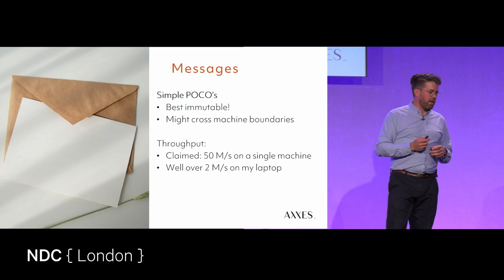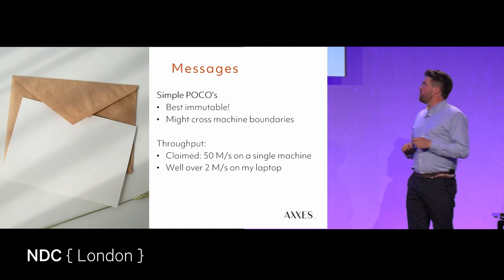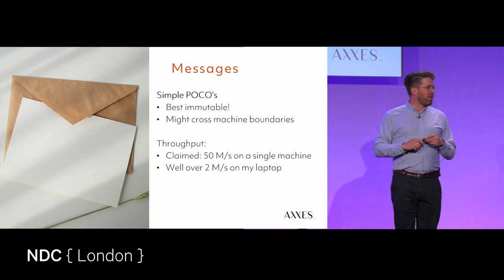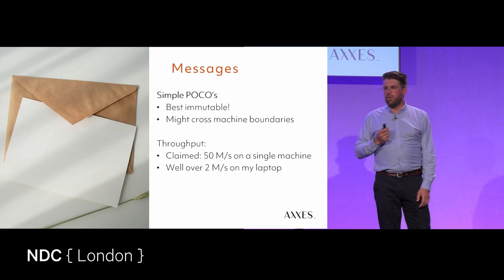The throughput that Lightbend claims for Akka.NET is about 50 million messages per second on the server. After the latest update of both .NET and Akka.NET, I get 4 million on my five-year-old laptop. So I have no reason to doubt those numbers. On a beefy server, that is definitely going to be possible.